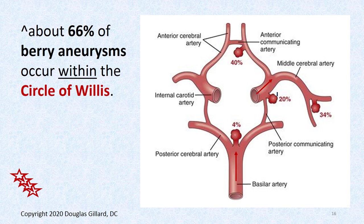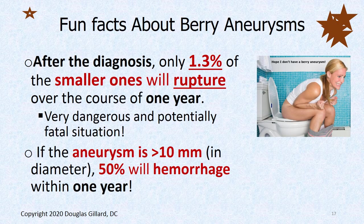Some occur at junctions elsewhere — about 34% occur right around the first takeoff of the middle cerebral artery. Aneurysms near the internal carotid can cause visual problems, and if they compress it, they can affect cranial nerve 3, the oculomotor nerve, which runs right next to them.